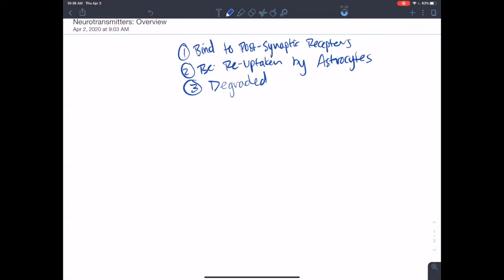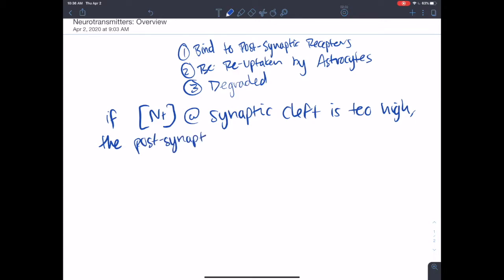But the point, the reason you do this, the reason you reuptake neurotransmitters, the reason you degrade neurotransmitters, is to decrease the concentration of neurotransmitters at the cleft. If the concentration of neurotransmitter at the synaptic cleft is too high, the post-synaptic receptors are more likely to be desensitized.